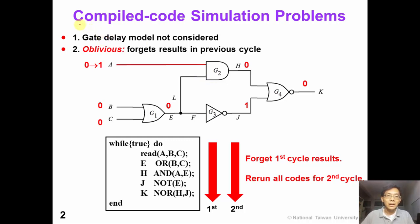The compile code simulation technique has two problems. First, the gate delay model was not considered by compile code simulation. Second, the compile code simulation is oblivious. That means this simulator forgets old results in the previous cycle. This is actually a waste of CPU resource.